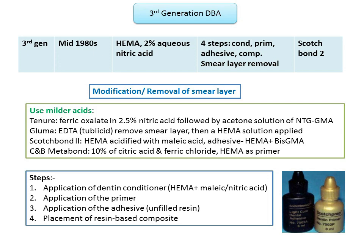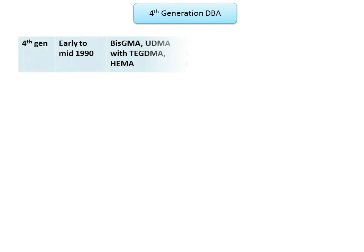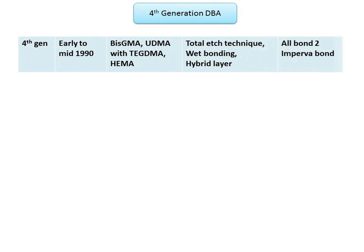Moving on to fourth generation dentinal adhesives, introduced in early to mid 1990s. The adhesive resin is made up of bis-GMA, UDMA (urethane dimethacrylate), along with DEGDMA and HEMA. The fourth generation is based on the concept of total etch technique, which was introduced by Dr. Takao Fujiyama in 1979. Let's take a detailed look at the total etch technique.